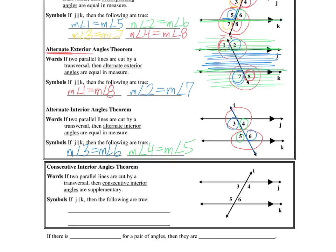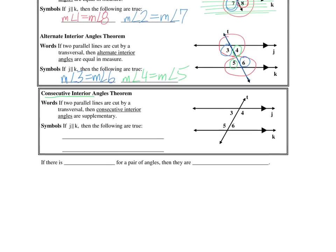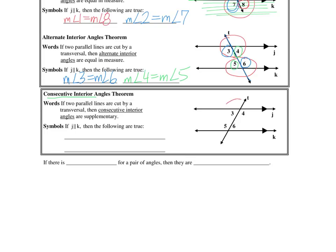Notice that all those angle measurements are equal. Now here's the exception — consecutive interior angles. Looking at angle three and angle five: angle three is obtuse and angle five is acute, so they're definitely not equal. The relationship is that if the lines are parallel, then those angles are supplementary — they add up to 180 degrees. Angles four and six are also consecutive interior and supplementary.